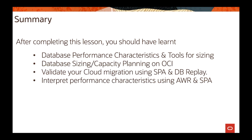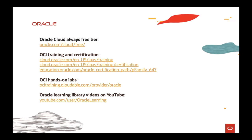In summary, we discussed database performance characteristics and tools for sizing, database sizing and capacity planning on OCI, how to validate cloud migration using SPA and Database Replay, and how to interpret performance characteristics using AWR and SQL Performance Analyzer. For more information, visit oracle.com/cloud to get started with free tier, training, and certification. For hands-on labs, refer to the CloudLabs platform, and subscribe to the Oracle YouTube channel for all training videos. Thanks for watching.